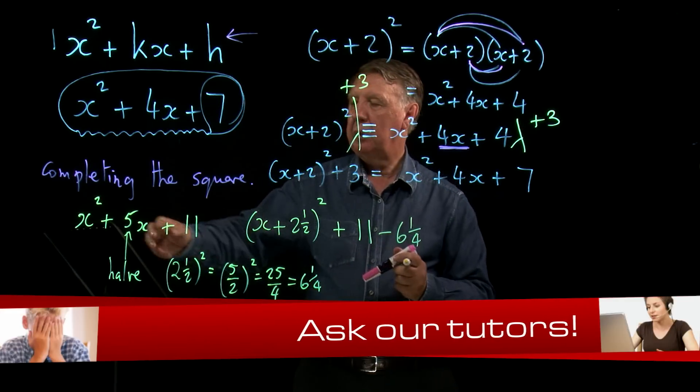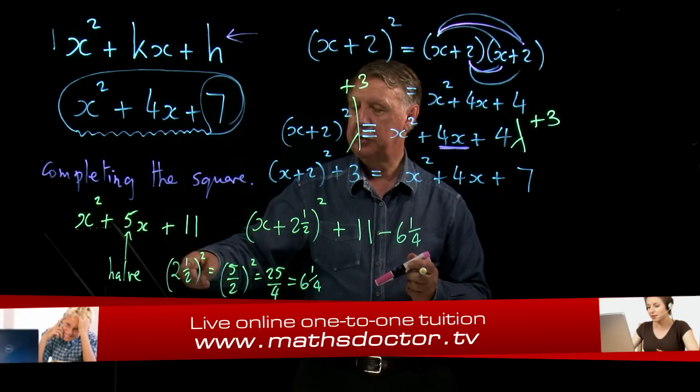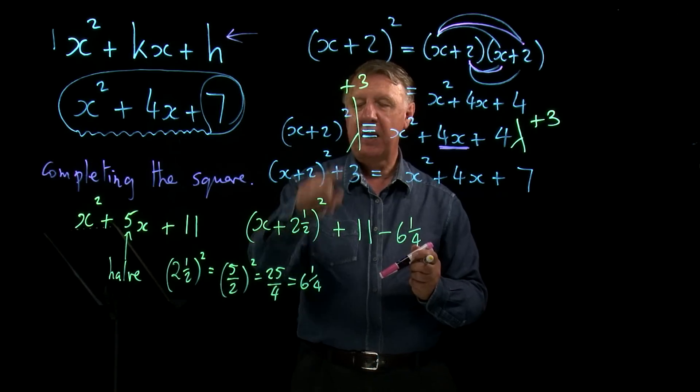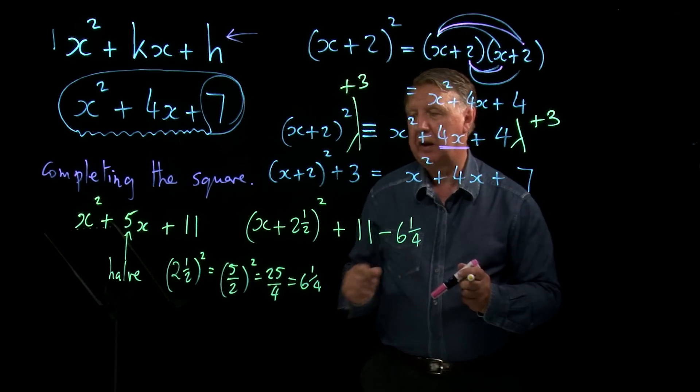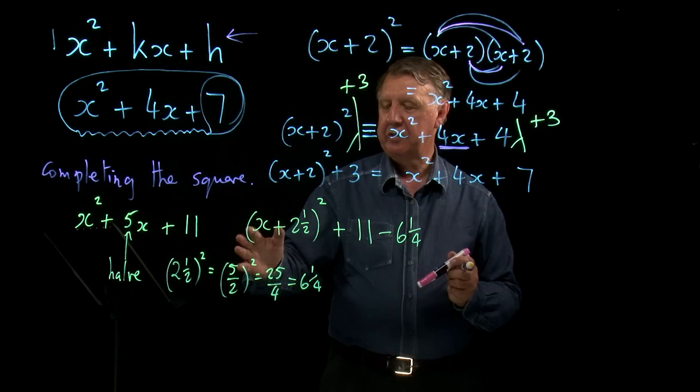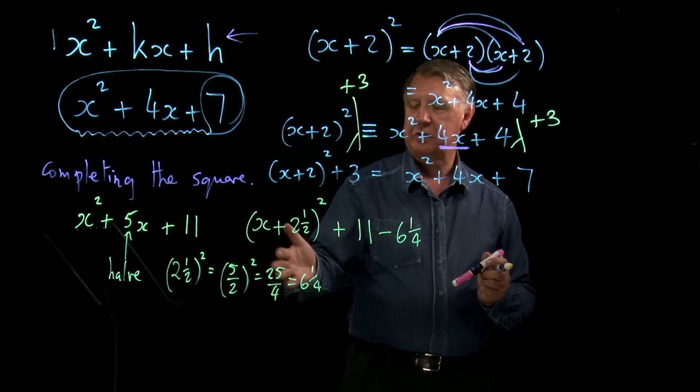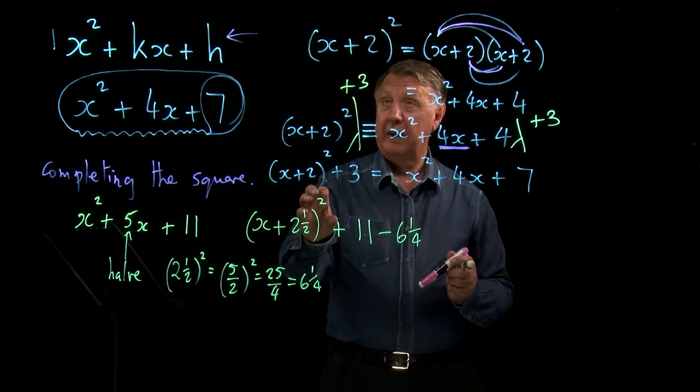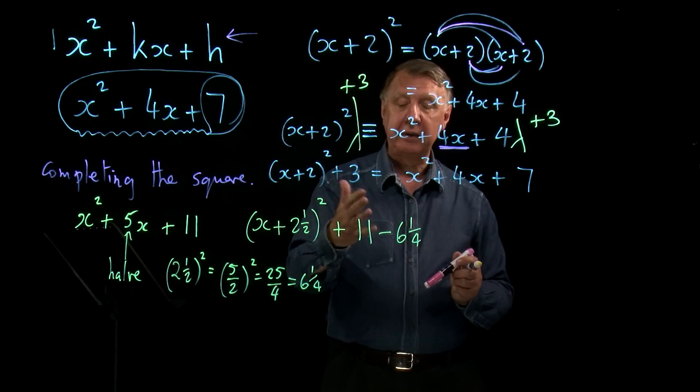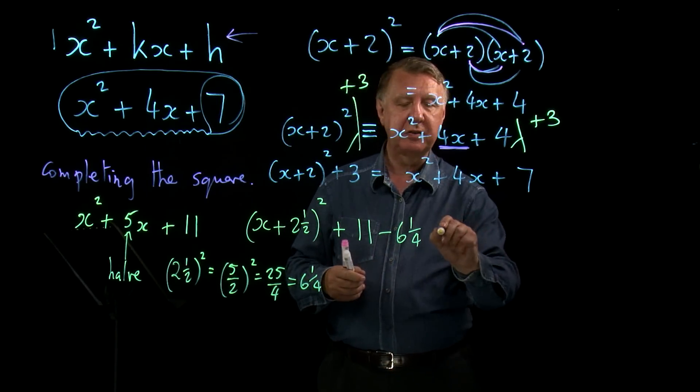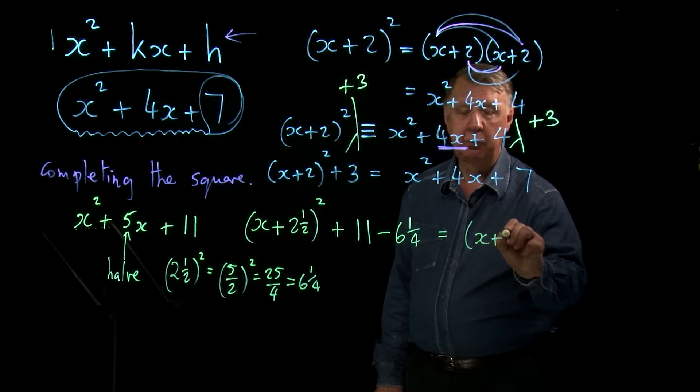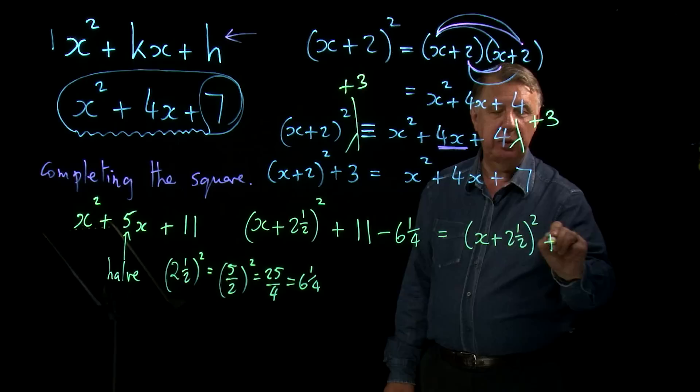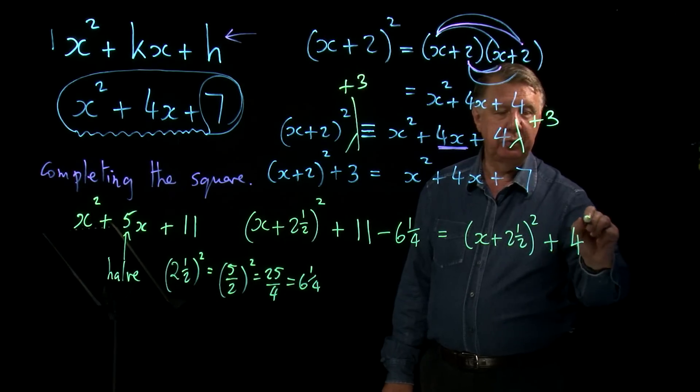So, let's just run through that again. We halve this number, 2 and a half, and we put it inside the bracket. We then, because we're squaring this bracket, we square 2 and a half. We use the knowledge of fractions to make it easier. So, 5 over 2 squared is 25 over 4, which is 6 and a quarter. We don't want that there, take it away, take it away there. So, the final answer, and 11 take away 6 and a quarter is plus 4 and 3 quarters.